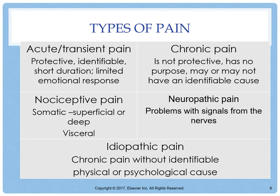Nociceptive pain involves nerves responding appropriately to a painful stimulus. Somatic pain involves stimulation of receptors in the skin, muscles, joints, and tendons — usually localized, described as throbbing or aching. Visceral pain involves internal organs and is often poorly localized; it may also be referred pain. Neuropathic pain, due to damage in the nervous system, is described as burning, sharp, numbing, or like an electric shock.